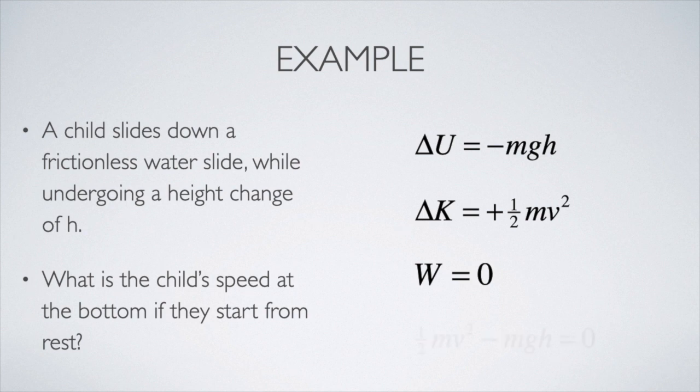So if I substitute those into the basic energy model equation, delta K plus delta U - there's no chemical, nuclear, or thermal energy changes - so all of those delta E's add up to the work which is zero. And then it's a one-step algebra solution to show that the speed is the square root of 2gh at the bottom.